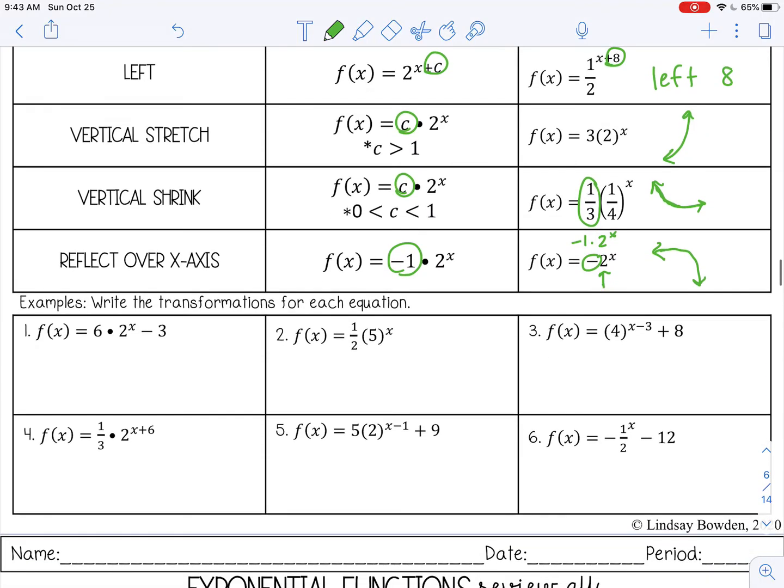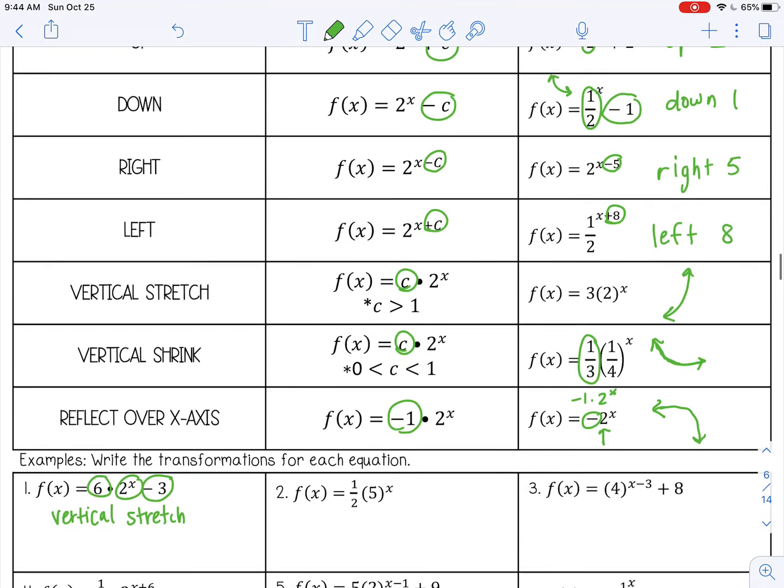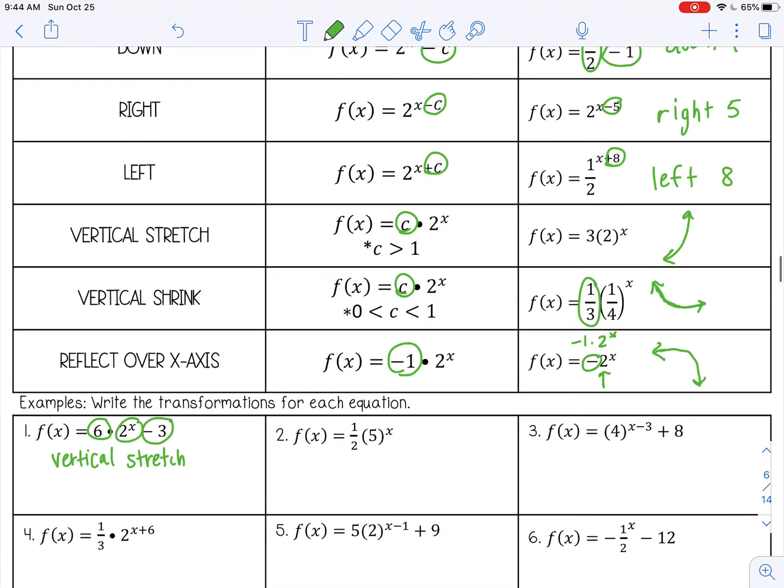Let's look at these examples. Write the transformation for each equation. So here is my b to the x. It's a growth function. And we have done two transformations. We've multiplied it by 6. So that's going to be a vertical stretch because it's a number greater than 1, which means it's just going to stretch out and grow really fast. And then we've subtracted 3 from the end. That's going to move it down 3.